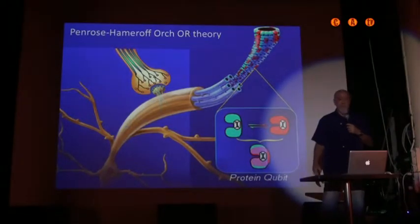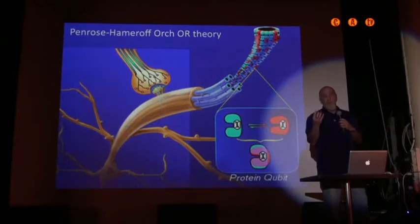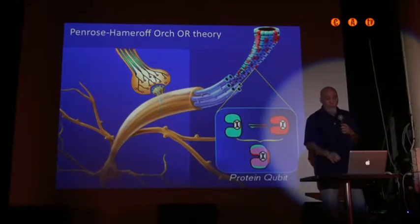So let me talk a little bit about the theory, the Penrose-Hameroff Orch-OR theory. OR is objective reduction, Penrose's mechanism, which brings in consciousness. Orch is orchestration, which has to do with the organization of these OR events through biological synaptic feedback and microtubule-associated proteins and so forth.